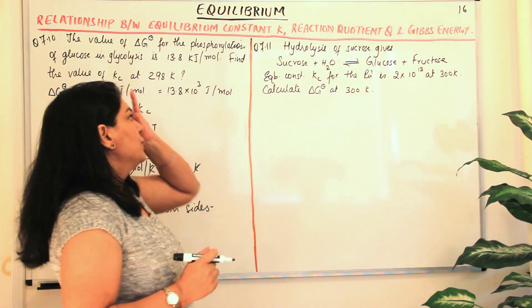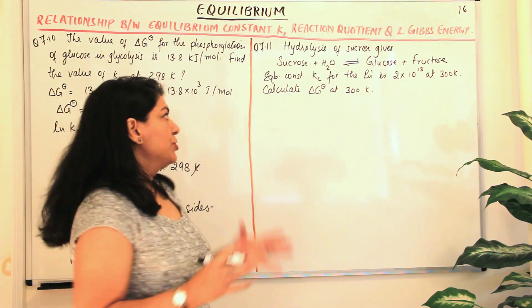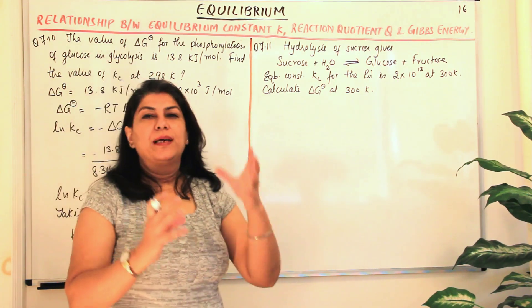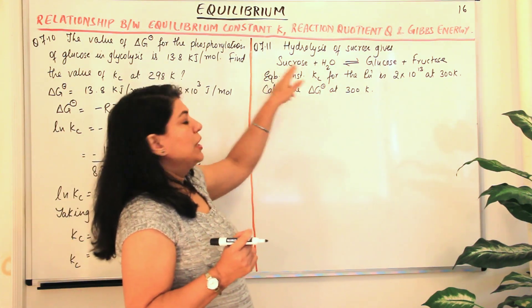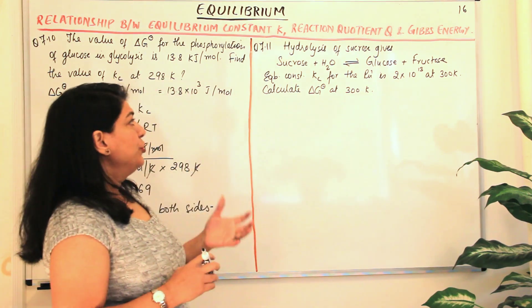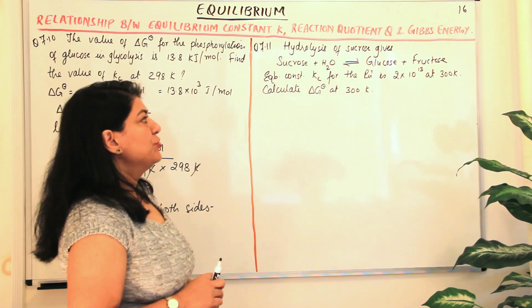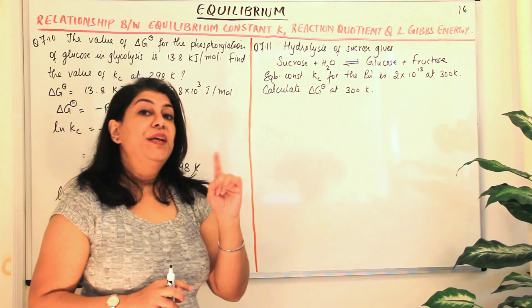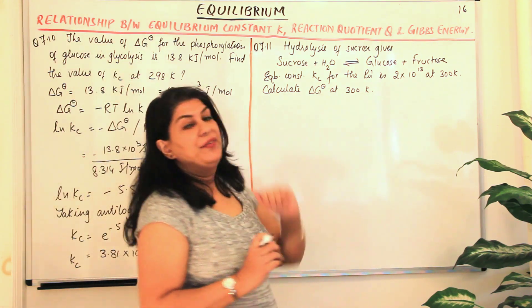Hydrolysis of sucrose gives you sucrose plus water gives you glucose and fructose. The formulae have been avoided because they are a little complex and it really doesn't matter since our interest is in the stoichiometry of the reaction. Equilibrium constant for this reaction is 2 into 10 to the power 13 at 300 Kelvin. You need to calculate delta G naught at 300 Kelvin.